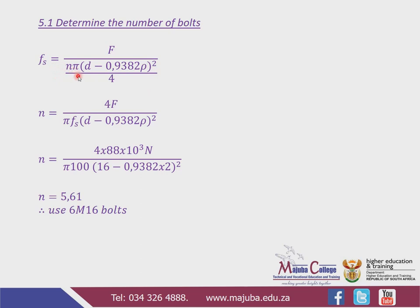Now we make n the subject of the formula. You can substitute your values directly and simplify, or rearrange. Multiply both sides by 4 to get 4F, then take n across and take the shear stress down. So n equals 4F divided by pi times (d minus 0.9382 times pitch) squared times shear stress.